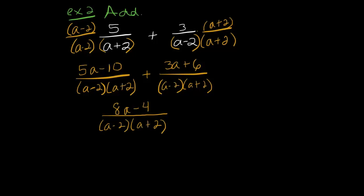And I get 8a minus 4 over a minus 2 a plus 2. And I'm going to factor that numerator to see if I actually have any common factors with my denominator. So let's factor out a 4. So I'd get 2a minus 1 on the numerator over a minus 2 a plus 2.